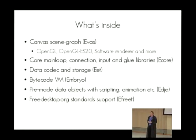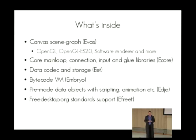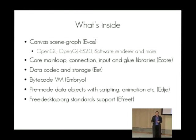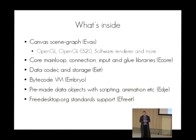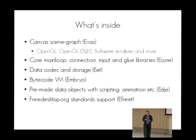We have a cool library called Eet. It's a data structure serialization library that can take any data structure from C or C++, walk through memory, dump it to disk as a portable blob of data, and read it back. It's extremely fast and is in fact the backend used for EDC, which loads data from disk at runtime to build every single widget. There's also Embryo, a bytecode virtual machine. The core VM code is about 2,000 lines of C — roughly a 35 kilobyte shared library — so it's very small, sandboxed, and fast.